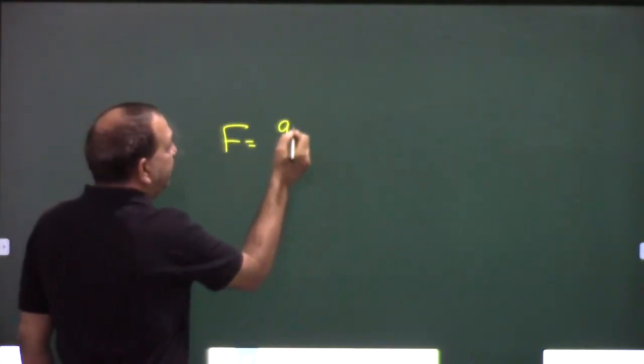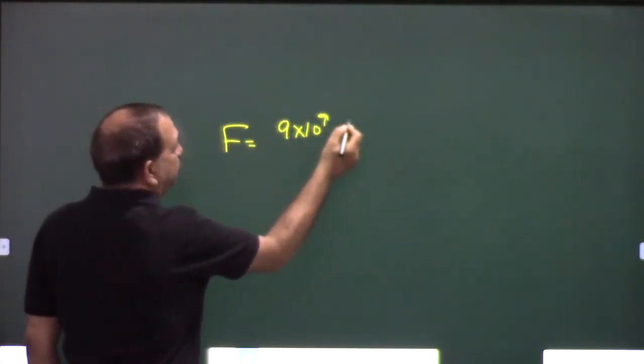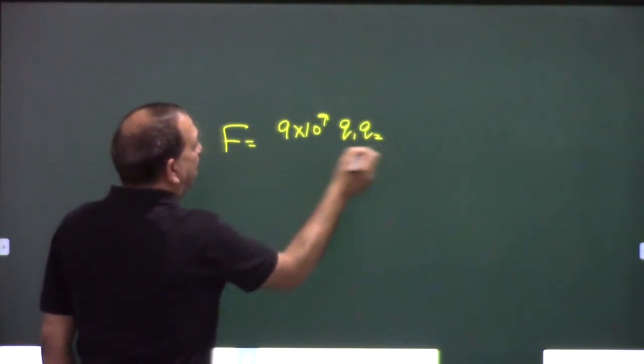Coulomb's law, right. Coulomb's law - what we learnt is the force is 9 into 10 to the power 9 q1 q2 upon r square.